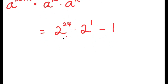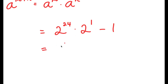Our goal throughout this video is to change our values to be as small as possible, so that at the end we can do whatever we need to do to get our final result. So for 2 to the power of 24, I can rewrite this as 2 to the power of 12 times 2.